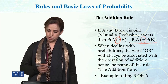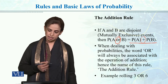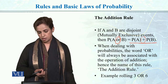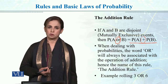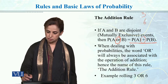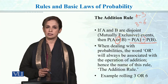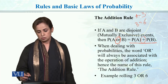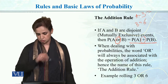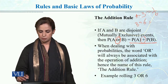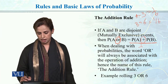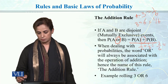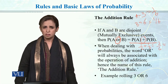When dealing with probabilities, the word 'or' is always associated with the addition rule — that is what I used to remember. For example, if you are rolling a die, what is the probability of getting 3 or 6? Event A is rolling a 3 and event B is rolling a 6. Both events are mutually exclusive, because if you get 3, you cannot get 6 on the same roll. So we apply the addition rule: probability of 3 is 1/6, probability of 6 is 1/6, so we add 1/6 plus 1/6, which equals 2/6, which simplifies to 1/3.